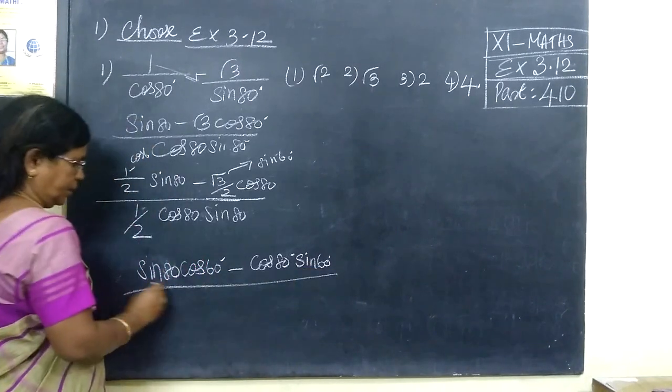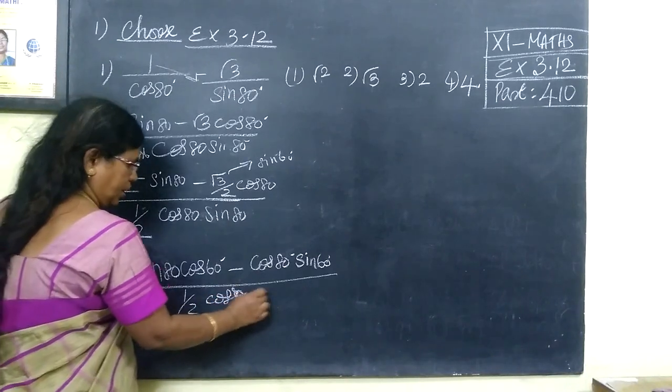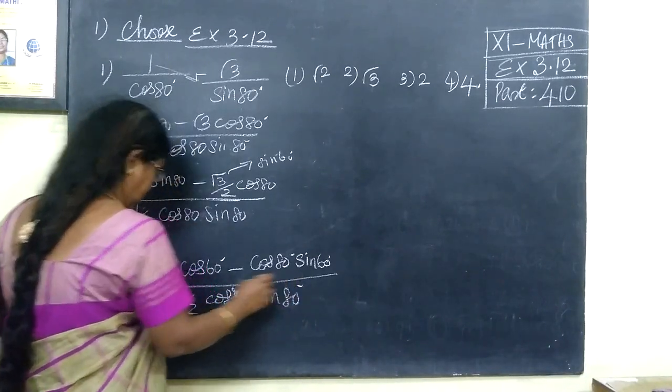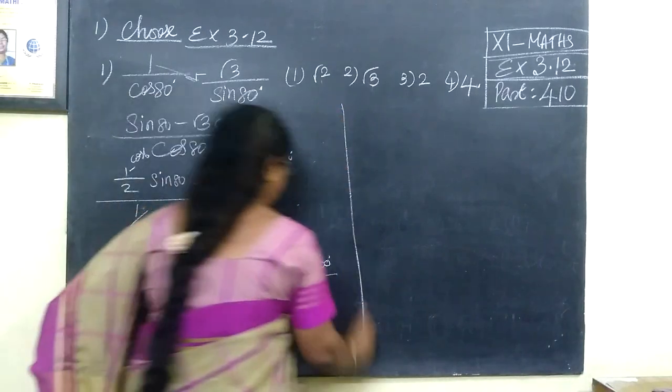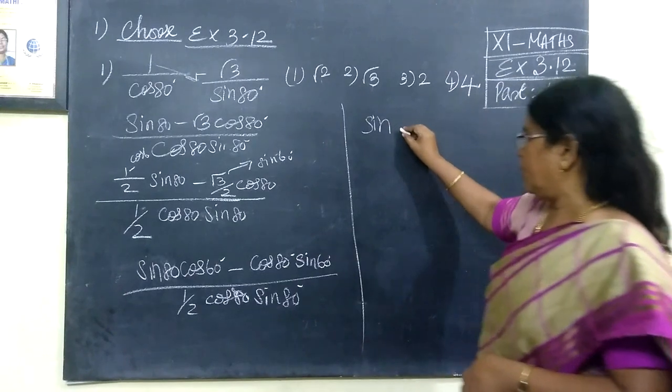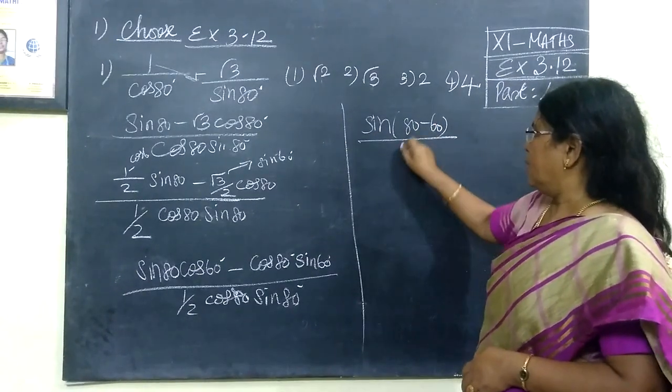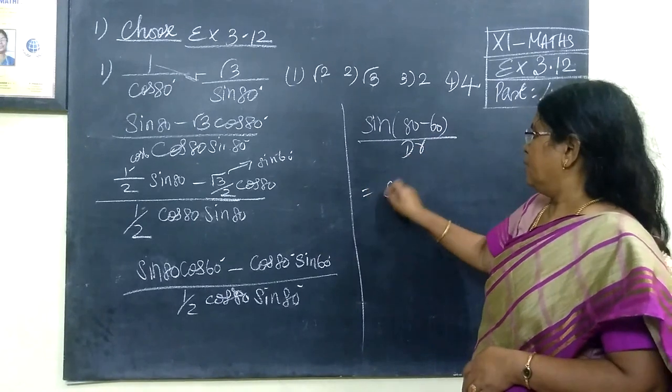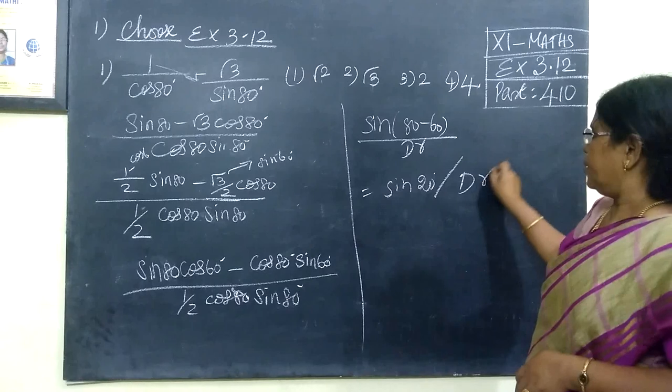And like that we get half into cos A B, then sin A B. This is nothing but sin of A minus B. So sin A cos B minus cos A sin B. So 80 minus 60, this is what it means, 20 in the denominator here.